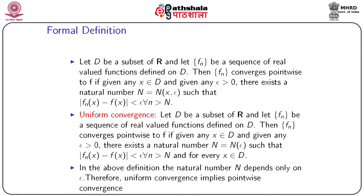Now we define pointwise convergence in a more formal way. Let d be a subset of ℝ and let fn be a sequence of real-valued functions defined on d. Then fn converges pointwise to f if, given any x belonging to d and any ε > 0, there exists a natural number N — which is a function of both x and ε — such that |fn(x) − f(x)| < ε whenever n > N. The key difference from convergence of sequences of real numbers is the important role played by x.